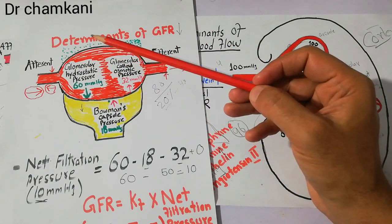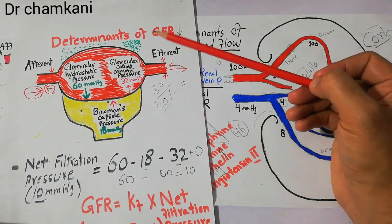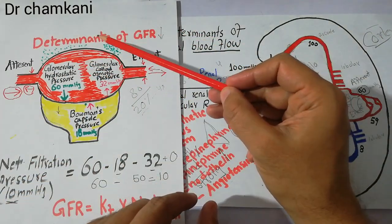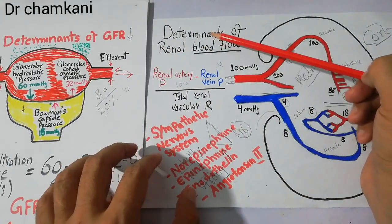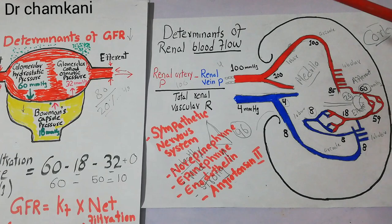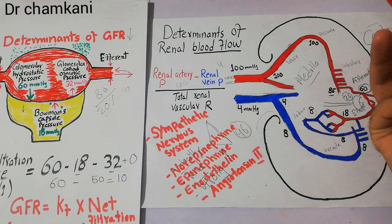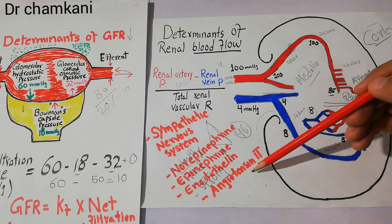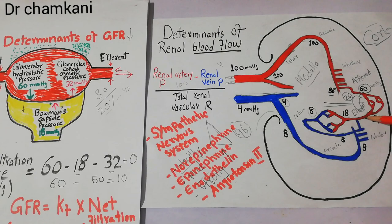These forces act as determinants of GFR, but they are themselves dependent on renal blood flow, which has its own determinants. When arterial pressure falls due to hemorrhage, volume depletion, or decreased salt intake, angiotensin 2 levels increase in the blood. Angiotensin 2 preferably acts at the efferent arteriole.